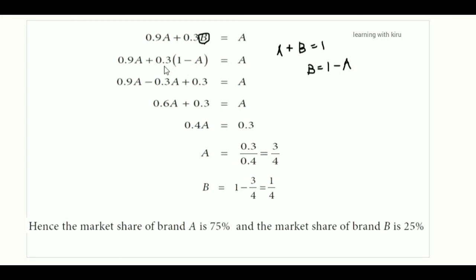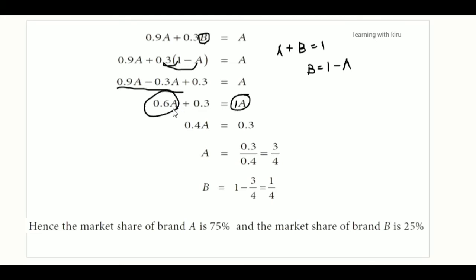Substituting B: first, 0.3 into 1 gives 0.3, and 0.3 into minus A gives minus 0.3A. So we have 0.9A plus 0.3 minus 0.3A. This simplifies: 0.6A is equal to A. Starting from A equals 1A, we get 0.4A equals 0.3.